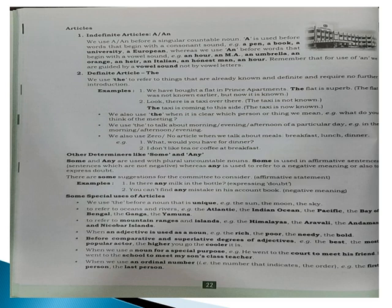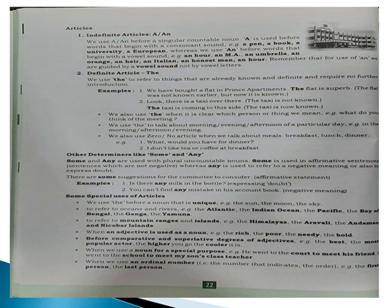There are some special uses of the article 'the'. We use 'the' before nouns that are unique — the sun, the moon, the sky. To refer to oceans and rivers: the Atlantic Ocean, the Ganga, the Jamuna, the Nile. To refer to mountain ranges and islands: the Himalayas, the Aravalli, the Andaman and Nicobar Islands. When an adjective is used as a noun: the rich, the poor, the needy, the blind. Before comparative and superlative degrees: the best, the most (superlative); the higher, the cooler (comparative).